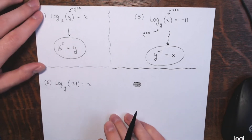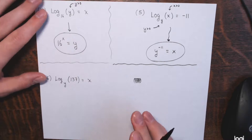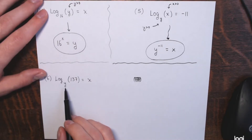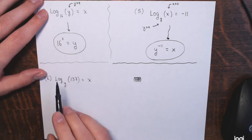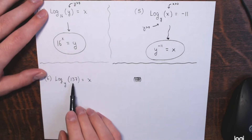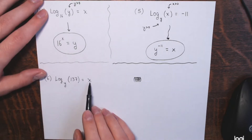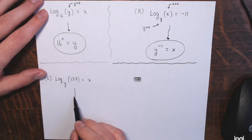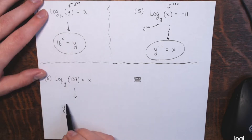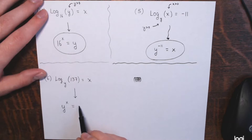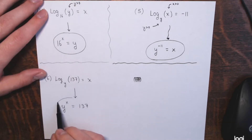Example 6, more of the same. This base y on the logarithm has to be positive. The x here is the output, which can be anything. We have the logarithm base y of 137 equals x. This means the exact same thing as y to the x power equals 137. And there's your equivalent exponential form.